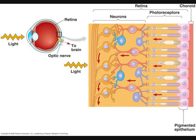Various neurons — retinal ganglion cells, bipolar cells, amacrine cells, and horizontal cells — exist in the inner region of the neural layer of the retina. These neurons are located in front of the photoreceptors, so light must pass through the layer of neurons in order to reach the rods and cones.